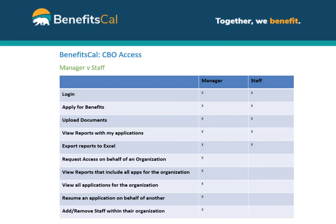There are two types of CBO accounts available on BenefitsCal: a CBO manager account and a CBO staff account. Both managers and staff can use BenefitsCal to apply for benefits, upload documents, and view reports of their applications. CBO managers can also view reports that include the activity of the staff in their organization, resume applications on behalf of another staff member, and add or remove staff accounts within their organization.